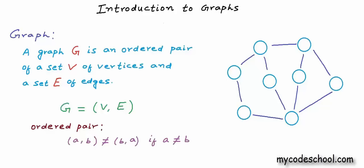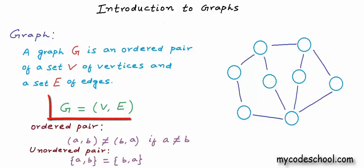We also have the concept of an unordered pair. An unordered pair is simply a set of two elements — order is not important. We write an unordered pair using curly brackets or braces. Because order is not important, unordered pair AB is equal to BA; it doesn't matter which object is first and which is second. So, a graph is an ordered pair of a set of vertices and a set of edges, and G = (V, E) is the formal mathematical notation we use to define a graph.